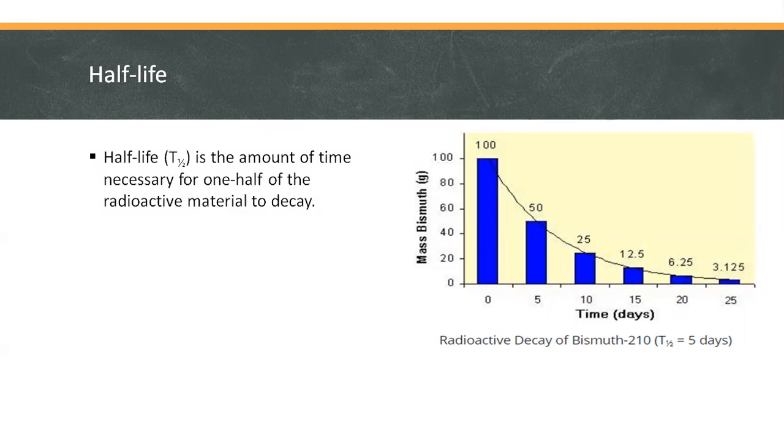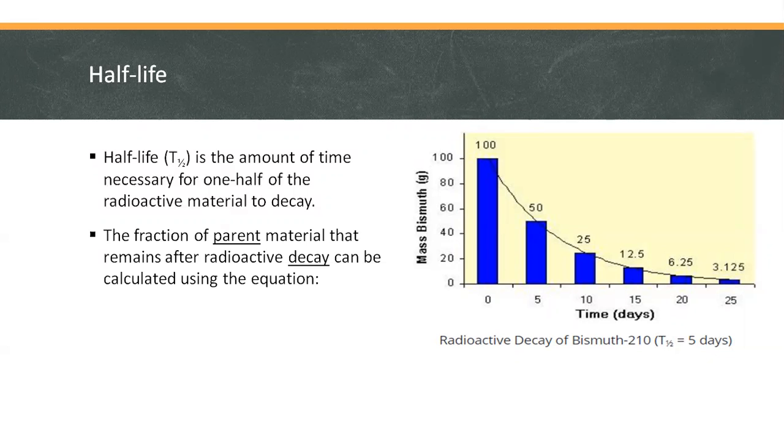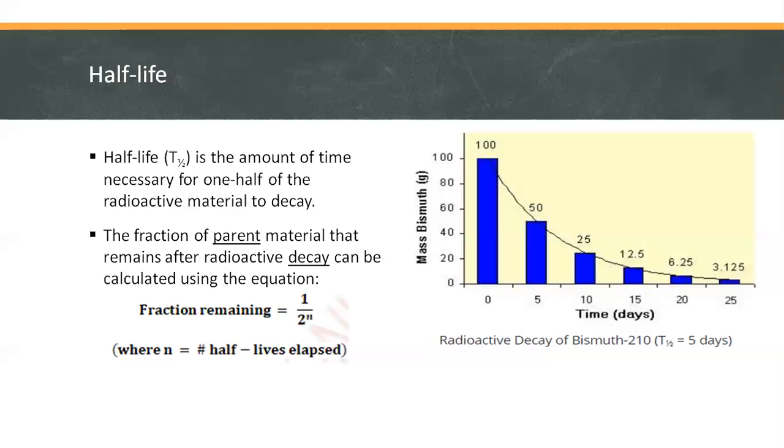The fraction of parent material that remains after radioactive decay can be calculated using the equation: fraction remaining equals 1 over 2 raised to n, where n is the number of half-lives elapsed. So in the case of bismuth, n is 5 days.